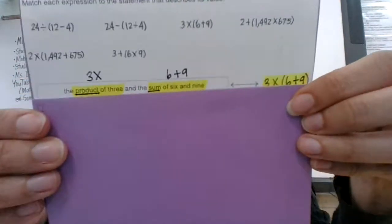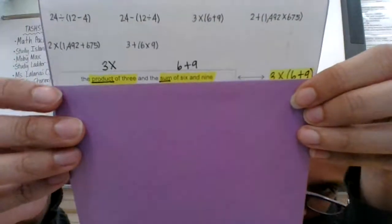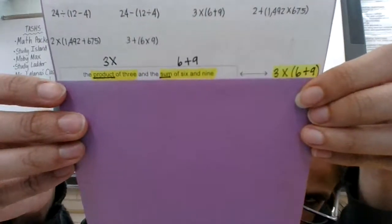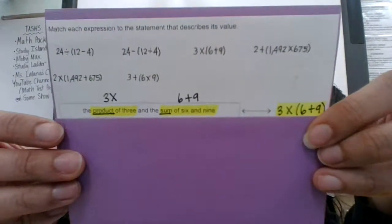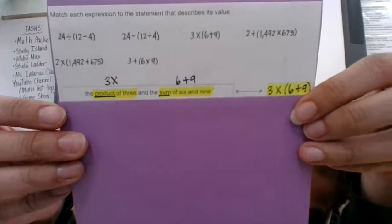Right here, where it says the product of three, that means it's 3 times, and then the sum of six and nine means 6 plus 9. I look at the expressions at the top and find the one that goes with it.